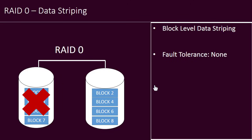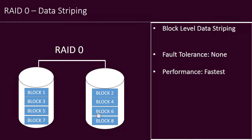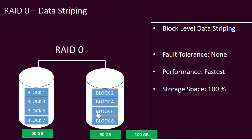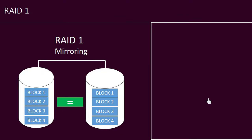RAID Level 0 uses block-level data striping. Fault tolerance is none — if one hard drive fails, all data will be lost. However, performance is fastest because parallel operations can be done. Considering both hard drives are 50 GB each, a total of 100 GB can be utilized for storing data, so storage space utilization is 100 percent.